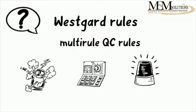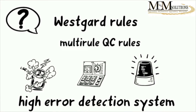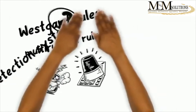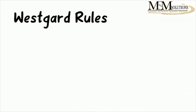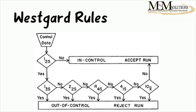The procedure uses five different control rules to judge the acceptability of an analytical run. The advantage of this multi-rule procedure is that false rejections are kept low while maintaining a very high error detection system. Let's get into the Westgard rules with a brief explanation of what they are.